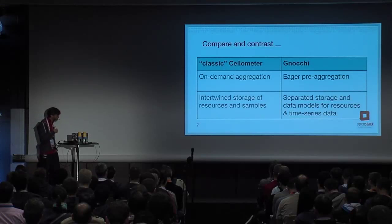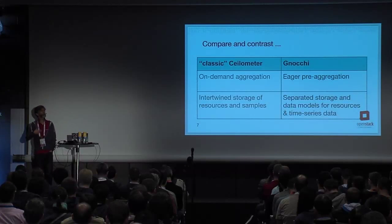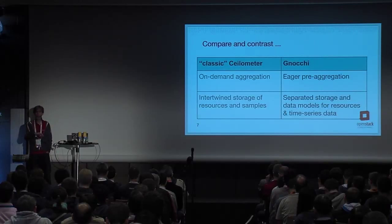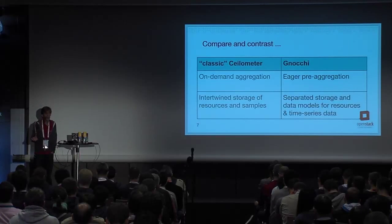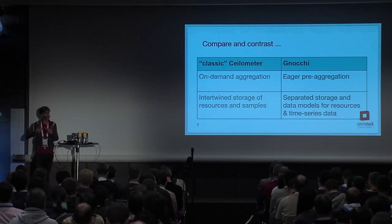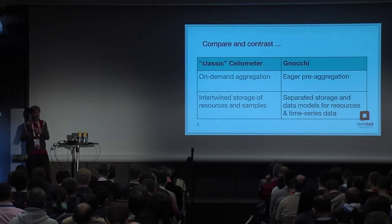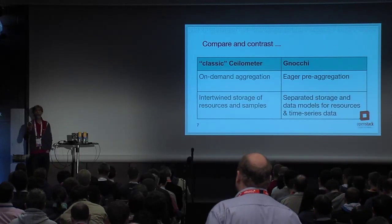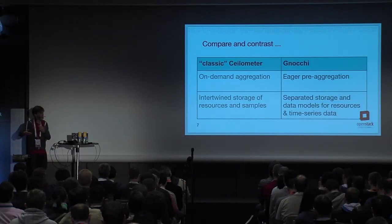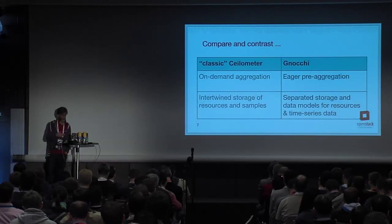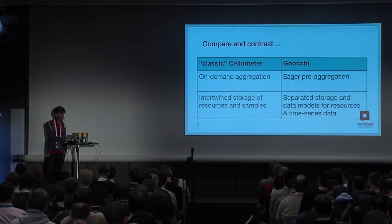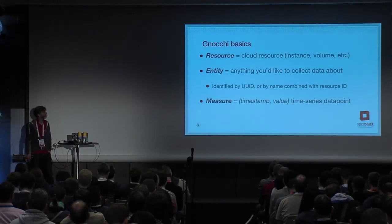Gnocchi does aggregation eagerly — as data is being ingested, it eagerly does the roll-up. You identify a number of aggregation functions like averages, minima, maxima, even standard deviations, and as data is being ingested, aggregation happens continually. Different storage drivers do it different ways — some do it absolutely eagerly as each data point is received; others do it in a slightly laggy fashion. But the effect is the same: for queries that don't extend over very recent time periods, you don't repeat this work over and over, because aggregation is done eagerly as data is received.